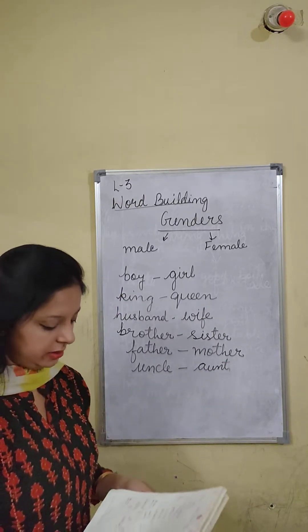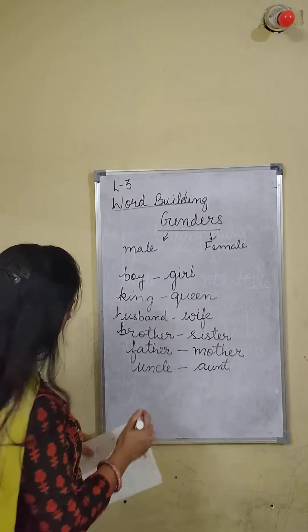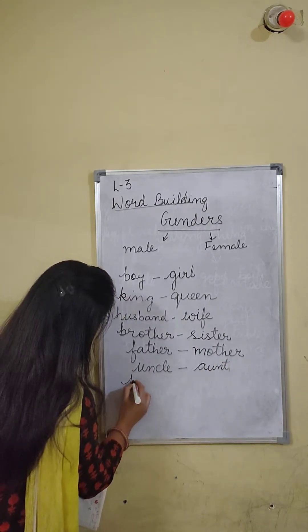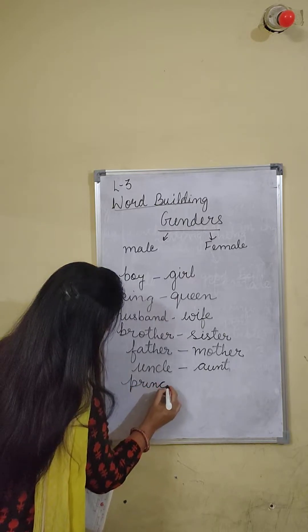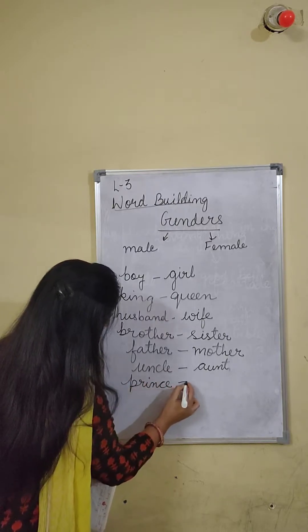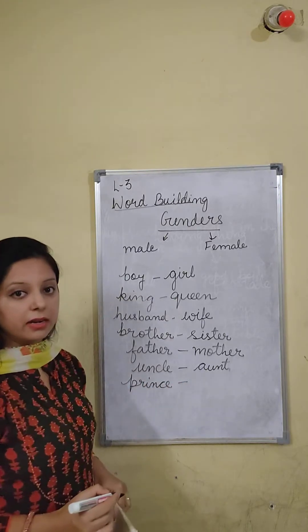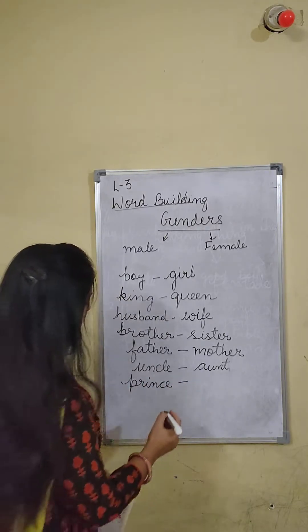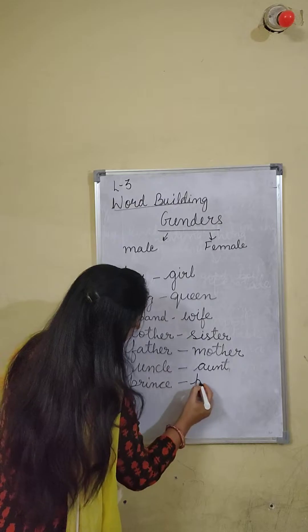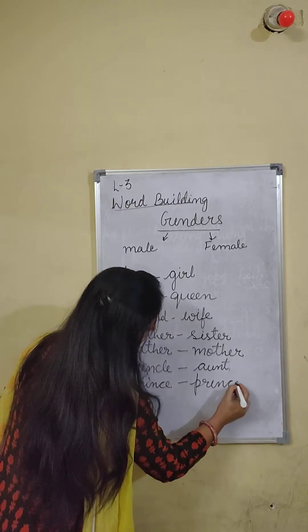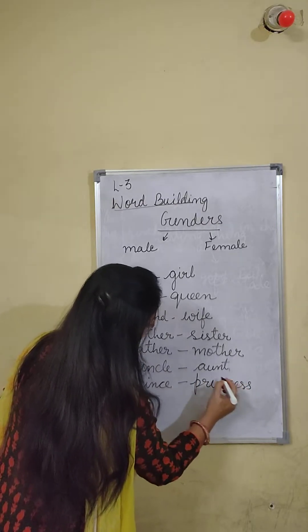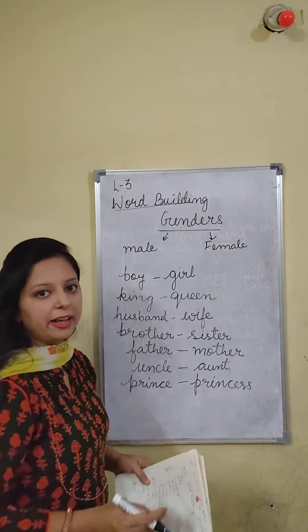Uncle and aunt. Prince — Prince means Rajkumar — and prince ka princess, Rajkumari.